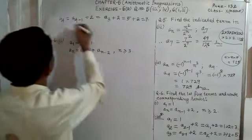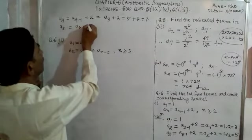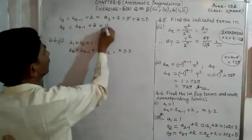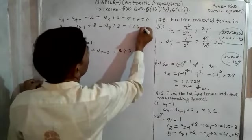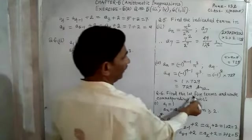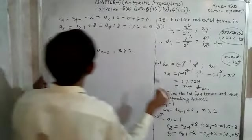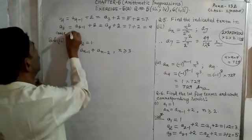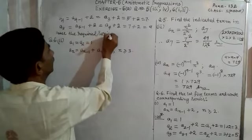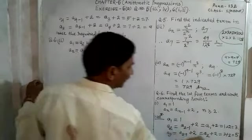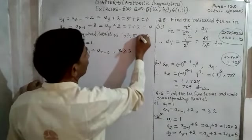When n = 5: a₅ = a₍₅₋₁₎ + 2 = a₄ + 2. The value of a₄ is 7, so a₅ = 7 + 2 = 9. These are the first 5 terms: 1, 3, 5, 7, and 9. The required series is: 1, 3, 5, 7, 9. That is the answer for sub-number one.